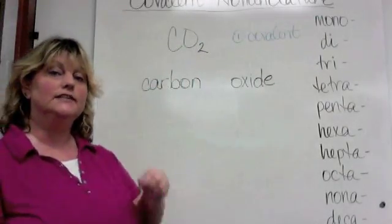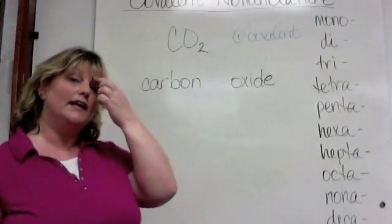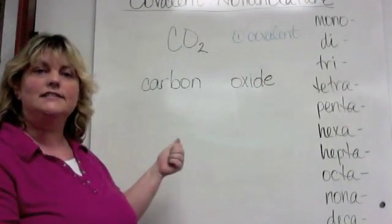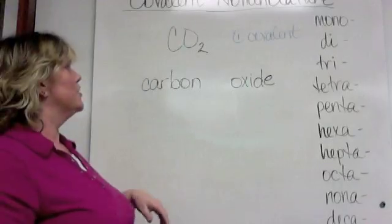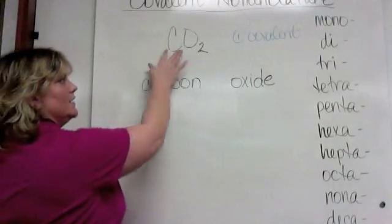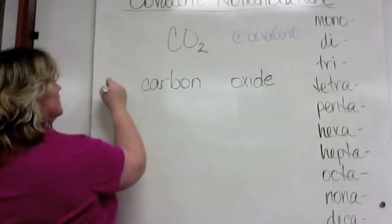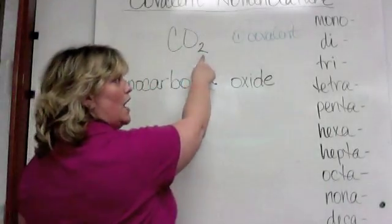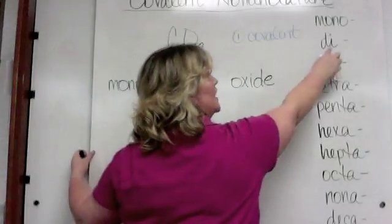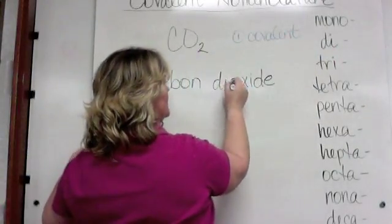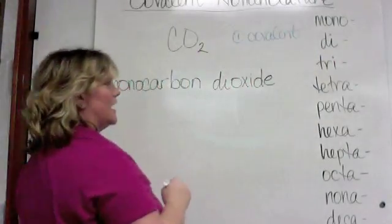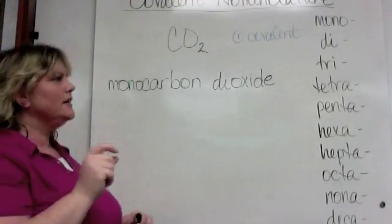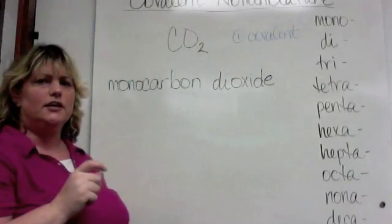The difference is that since this is a molecule, I have to say how many. I have one carbon and two oxides — so that gives us 'dioxide.' The result is carbon dioxide — one carbon and two oxides.